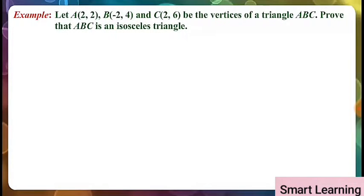Let A(2,2), B(-2,4), C(2,6) be the vertices of a triangle ABC. Prove that ABC is an isosceles triangle.